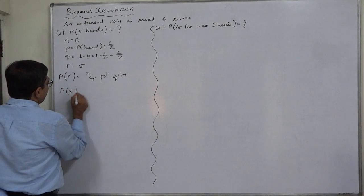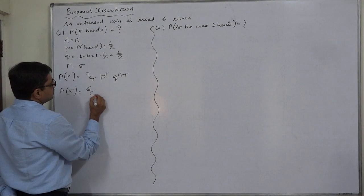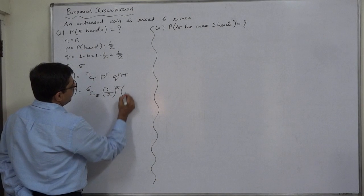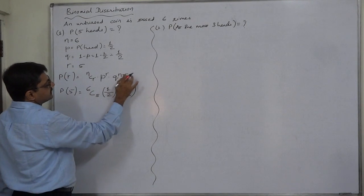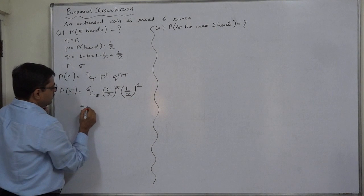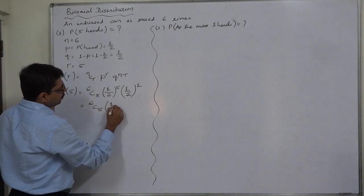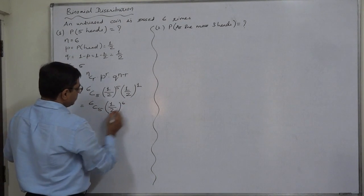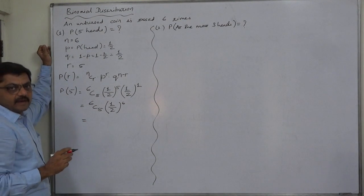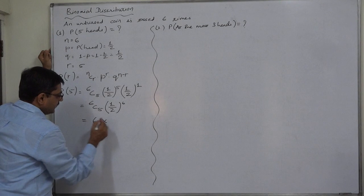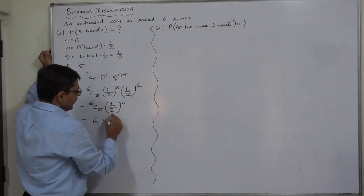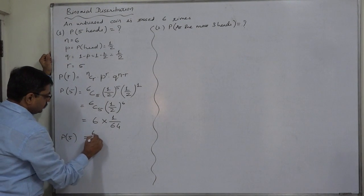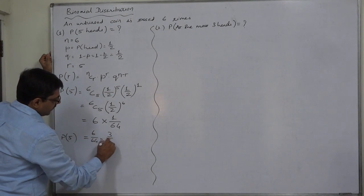So the probability of five successes will be 6C5 into one by two raised to five into one by two raised to n six minus R five, one. So ultimately it is 6C5 into one by two raised to six, since the base is common there should be addition of powers. Now what is 6C5? 6C5 is six. So ultimately, probability of five heads comes to six by sixty-four or three by thirty-two.